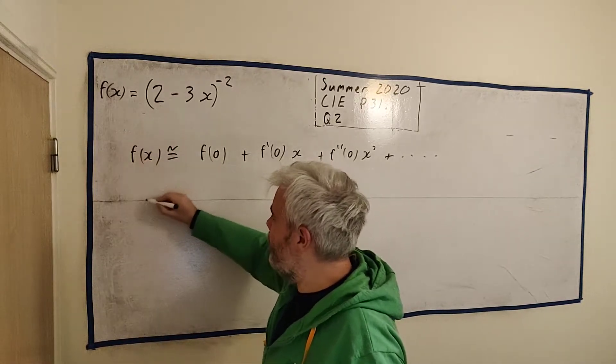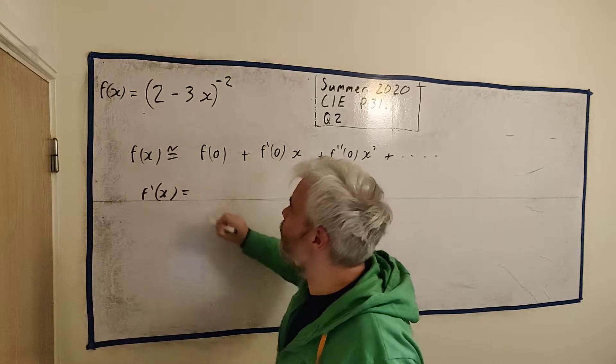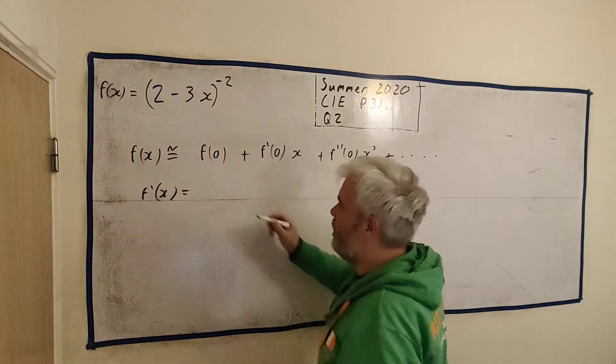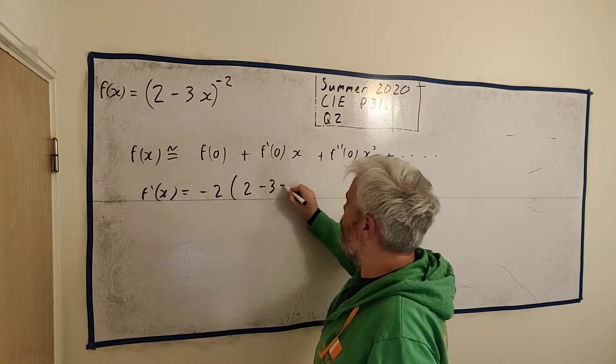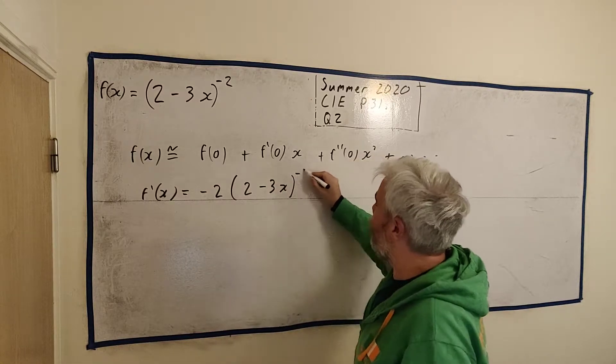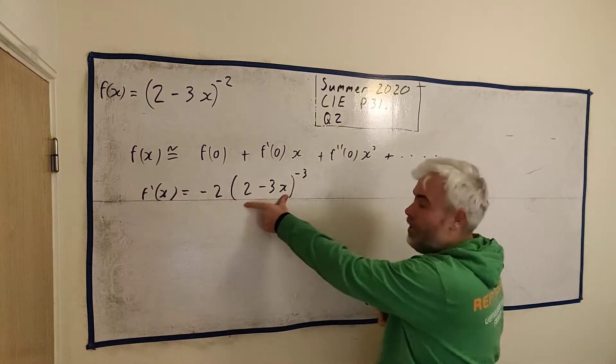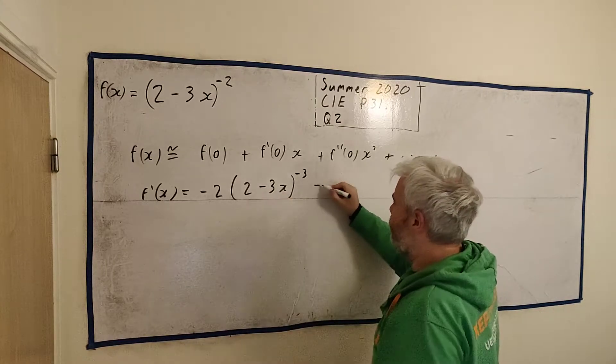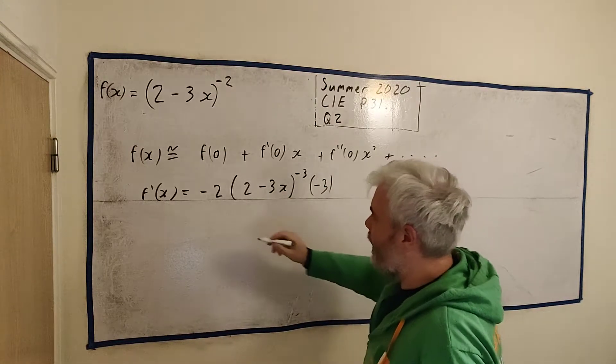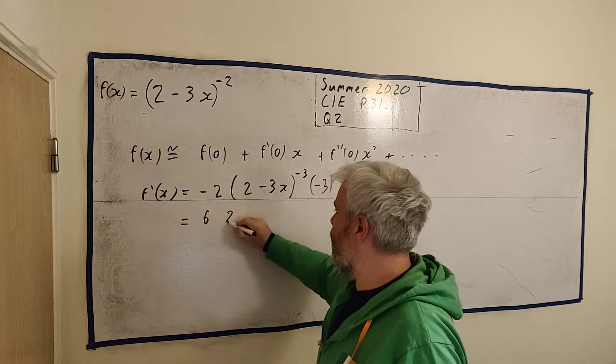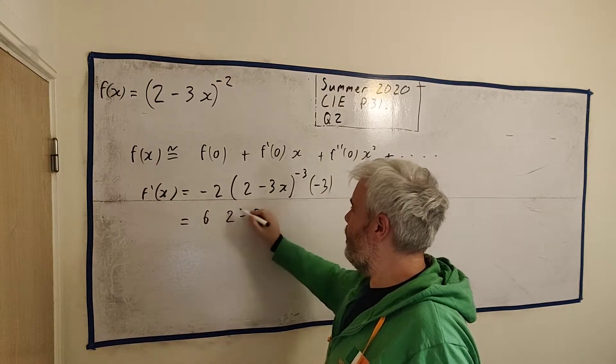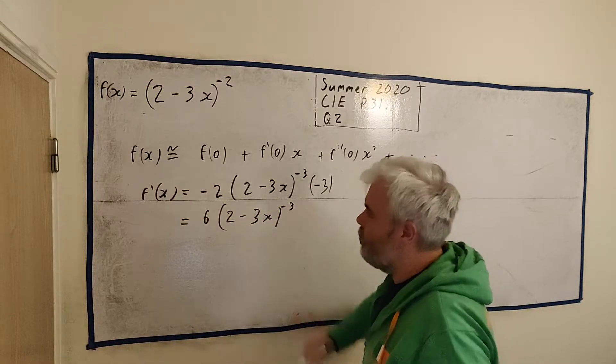We have f(x). Let's get to the derivative of f(x). That is, we differentiate this function. It's the chain rule. Minus 2 times 2 minus 3x to the power of minus 3. And then let's differentiate what's inside. And we get minus 3. And let's clean this up a bit. Minus 3 and minus 2, we get 6. So 6 times 2 minus 3x to the power of minus 3.